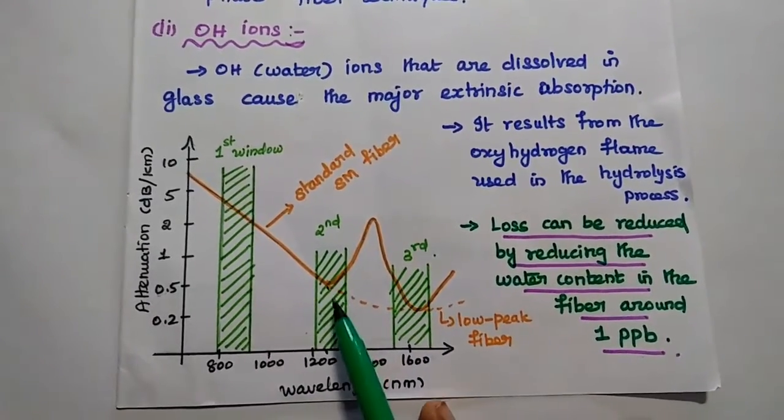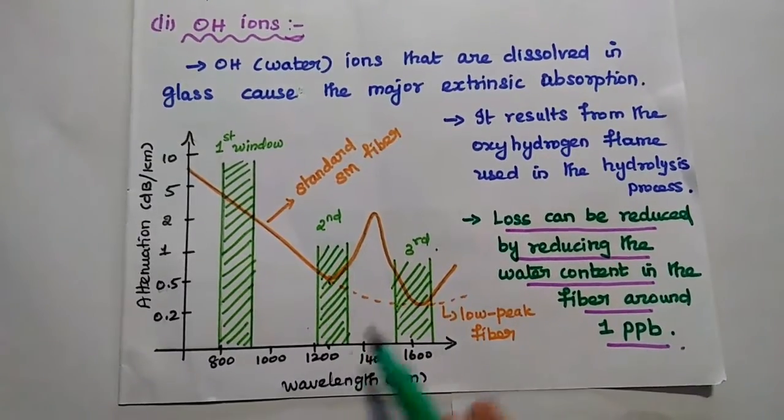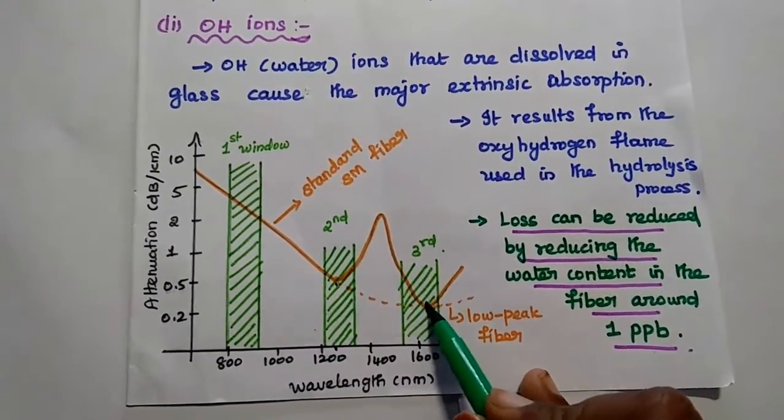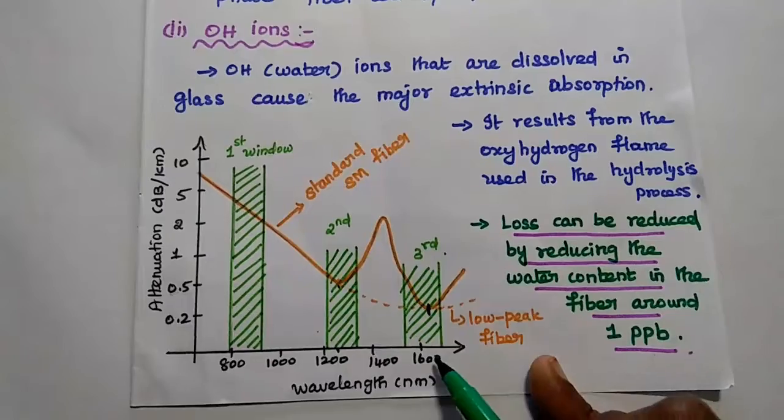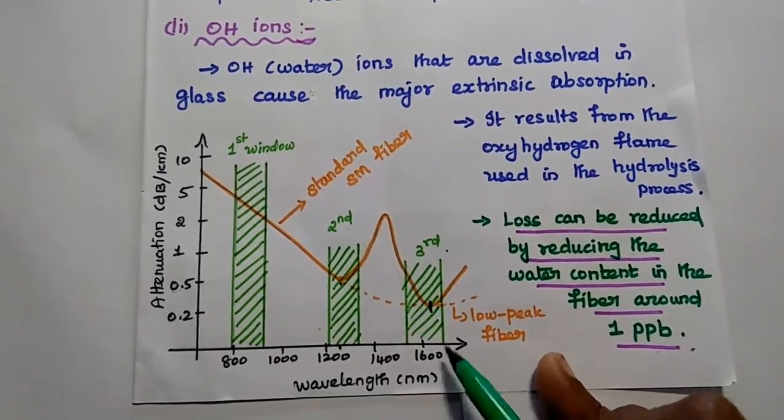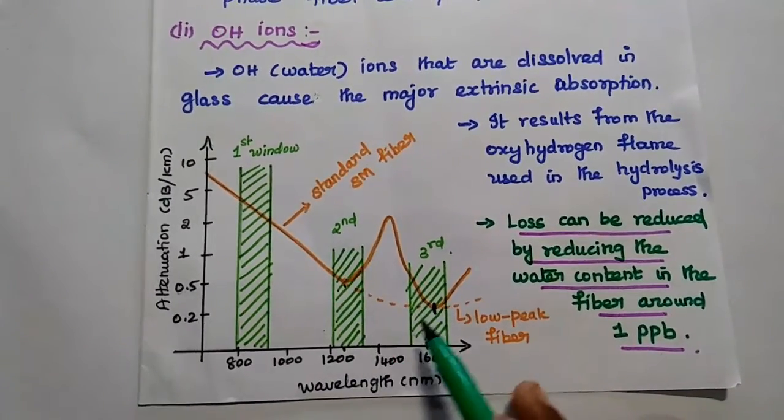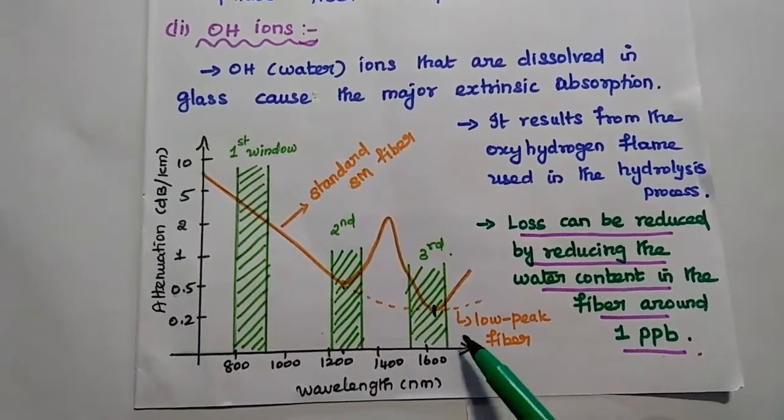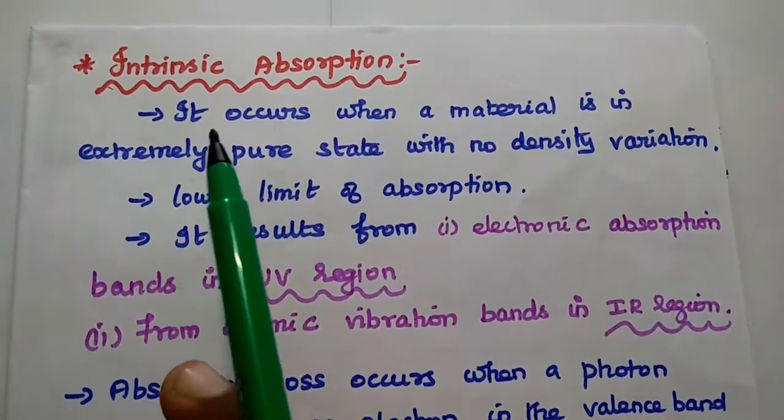This is the lowest point for this second window. This value is 0.25 at 1510 nanometer. These two windows are widely used in many applications. Last one is intrinsic absorption.